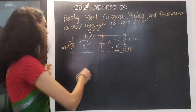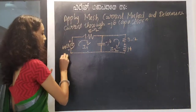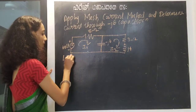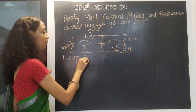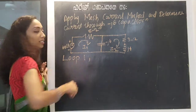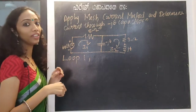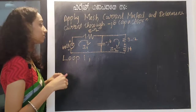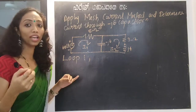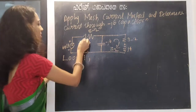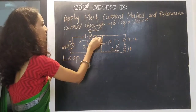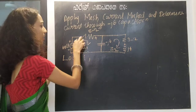Now consider the first loop, that is loop 1. We don't have a current source. Simply, if we consider minus or plus, the current is clockwise.